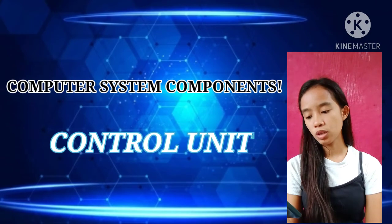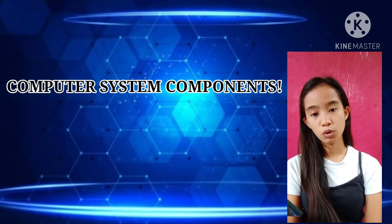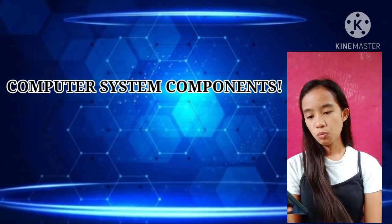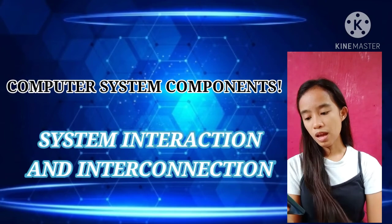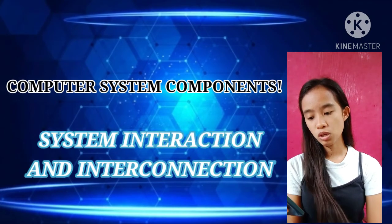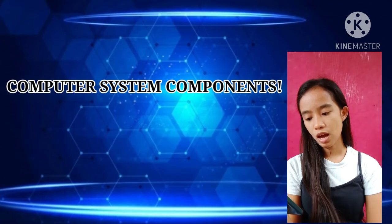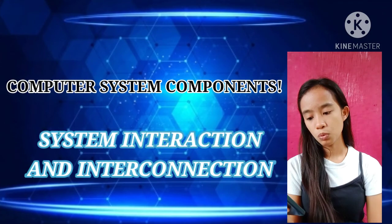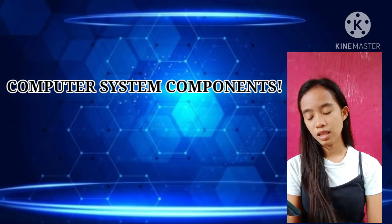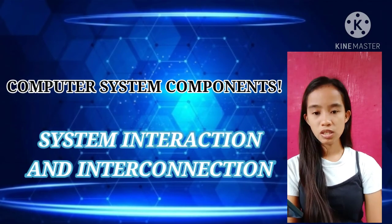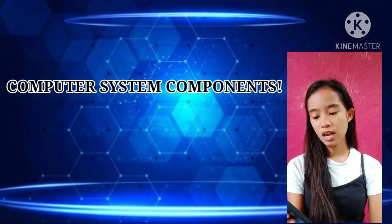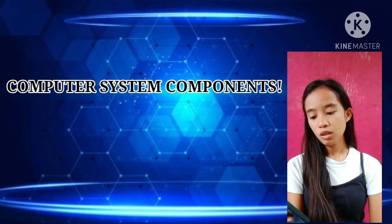The control unit coordinates the operations of the computer. The system interconnections are buses — a bus is a group of lines used to transfer bits between the microprocessor and other components of the computer system. Only one transmitter can use the bus at a time, and only the addressed device can respond. The bus has three types: address bus, data bus, and control signals.